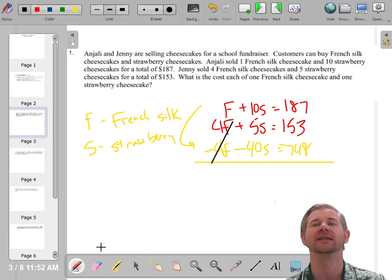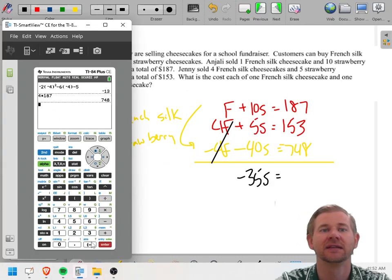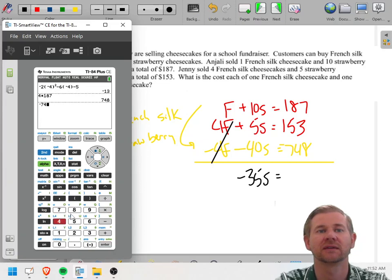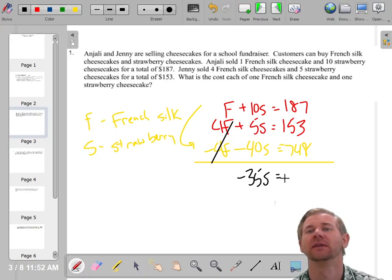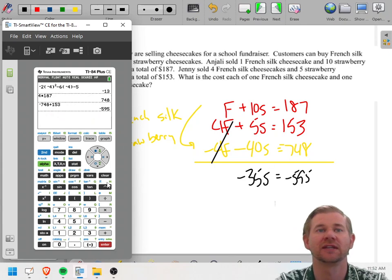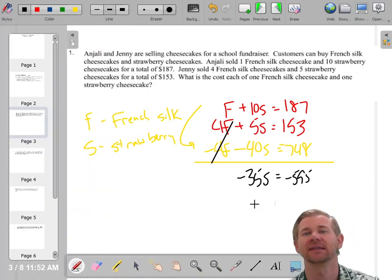Now those cancel out and you get negative 40 and 5 make negative 35S. And on the other side, I need to now add negative 748 plus 153, negative 595. And then the last thing I need to do is divide both sides by negative 35. Obviously we're not going to sell a negative amount of cheesecake. So if we get a negative number, something's wrong, but we get positive 17. So S is 17.